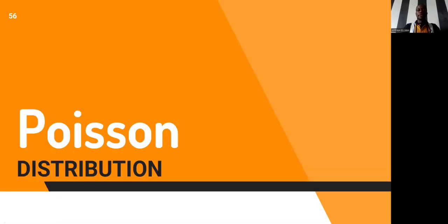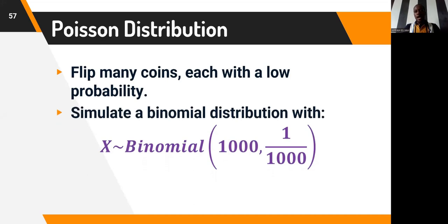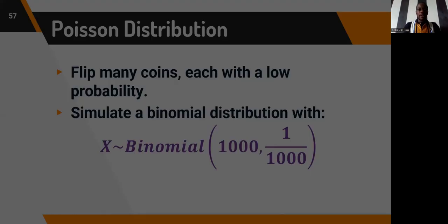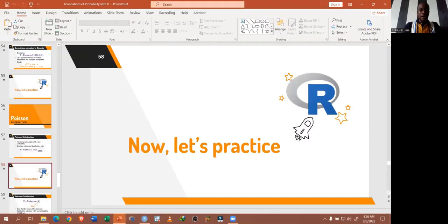Now we move on to the Poisson distribution. When you flip so many coins but each has a very low probability of getting heads, what is going to happen? If we simulate a binomial distribution with 1,000 coin flips and a 1 out of 1,000 chance of getting heads — meaning the probability is 0.001 — then what is really going to happen? Let's go ahead into R and practice that.